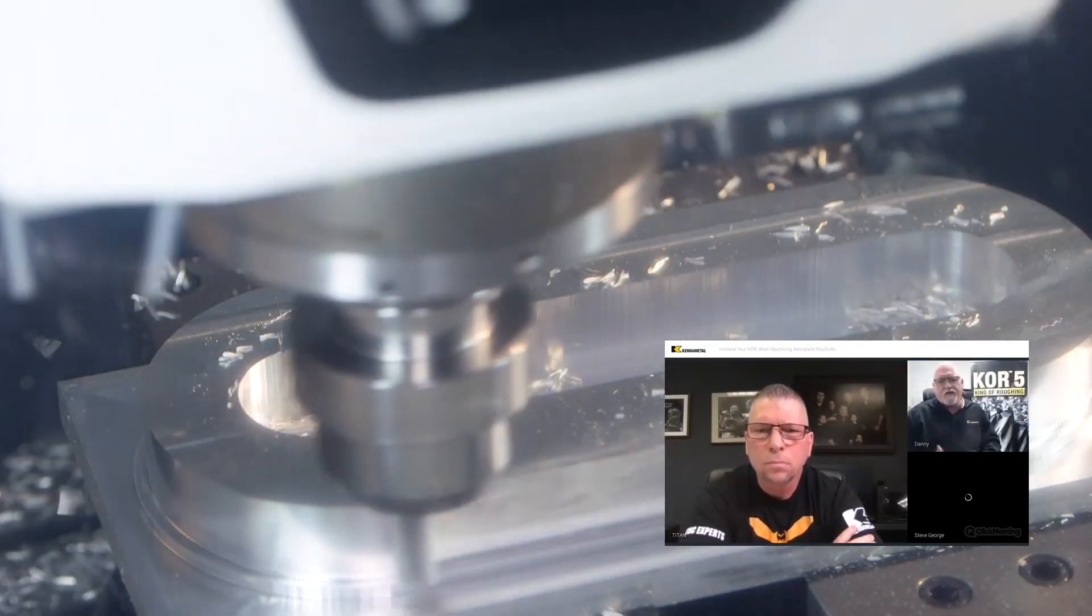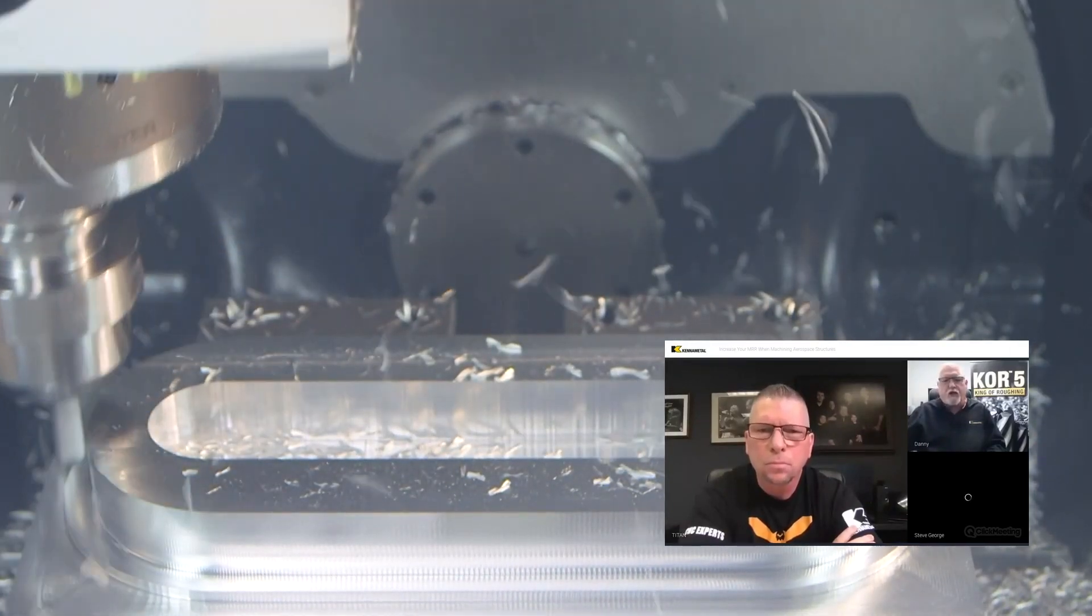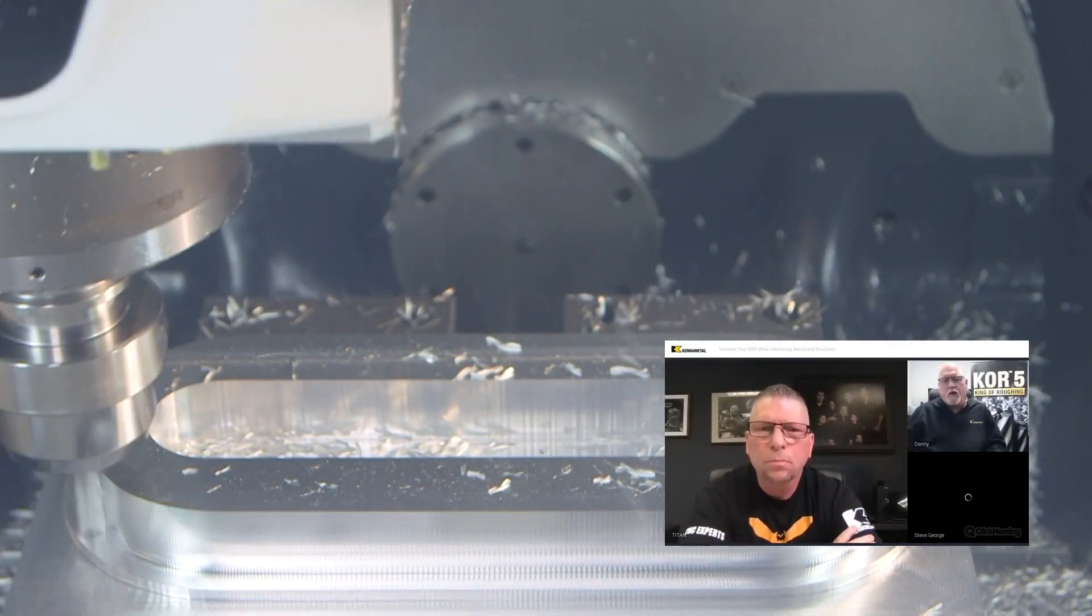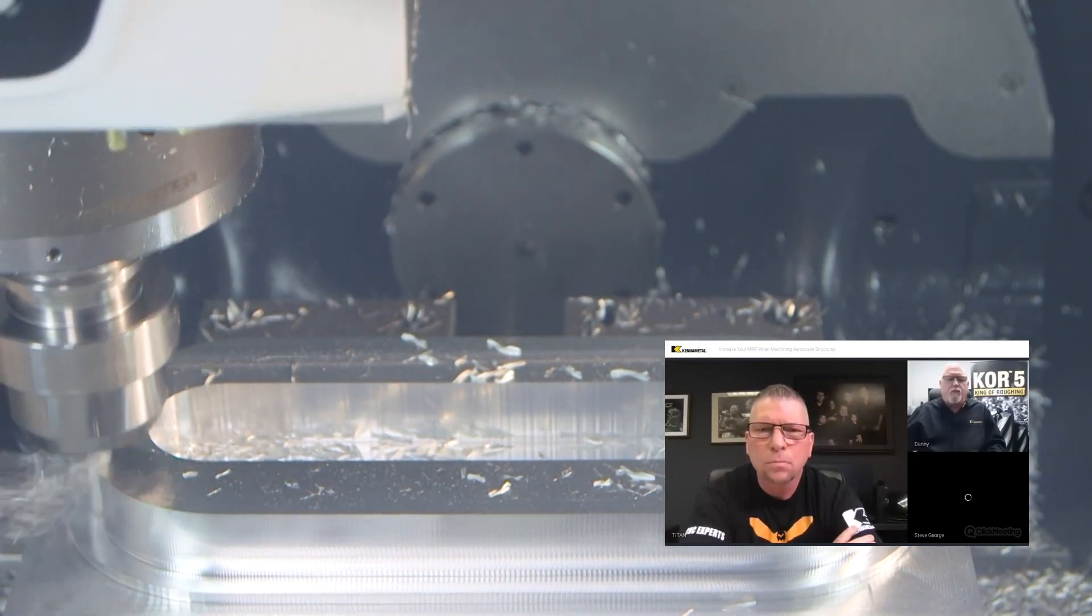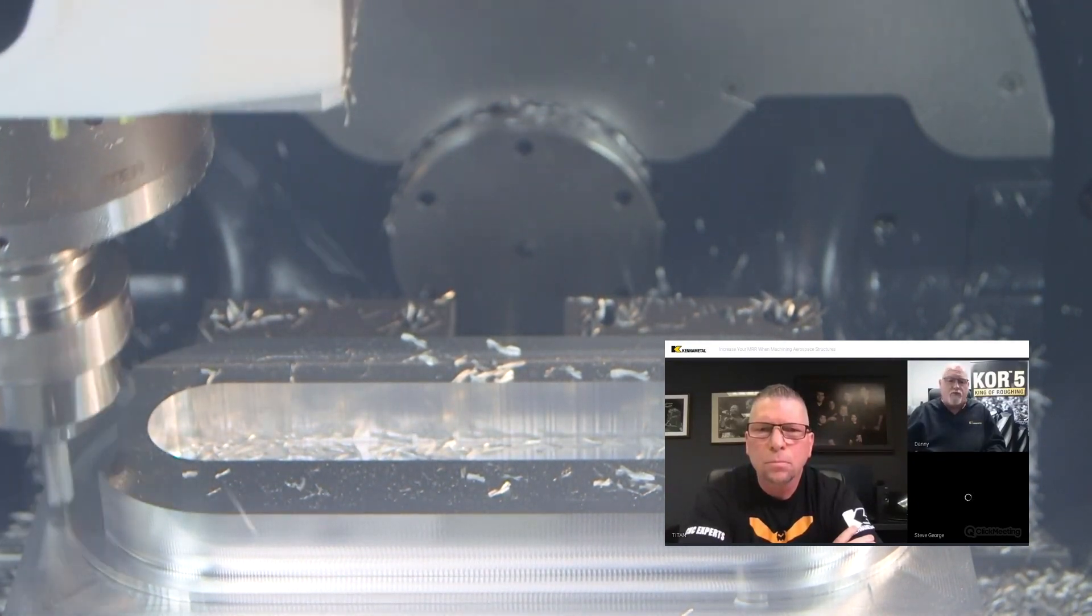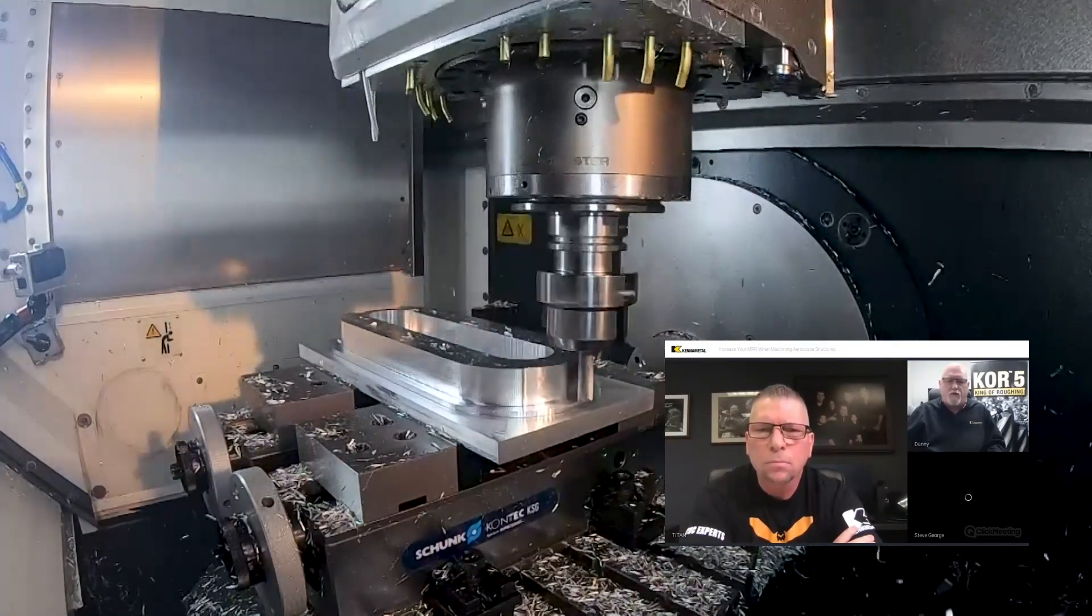But even at 1,600 inches a minute, we had a conversation and said, even though it was 1,600 inches a minute, we were maxing out the machine torque and horsepower. We knew we could actually remove more cubic inches of material by dialing down those RPMs a little bit because we were at 20,000 RPMs.